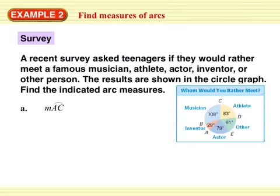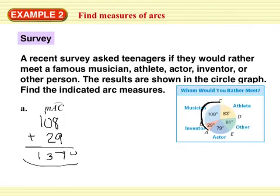Example two, find measures of arcs. A recent survey asked teenagers if they would rather meet a famous musician, athlete, actor, inventor, or other person. The results are shown in the circle graph. Find the indicated arc measures. The first one is the measure of arc AC. AC is a minor arc, so it's going to be less than 180. So the measure of AC is 108 plus 29, 137 degrees.